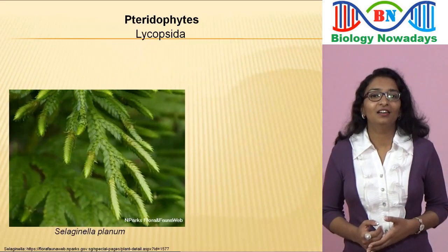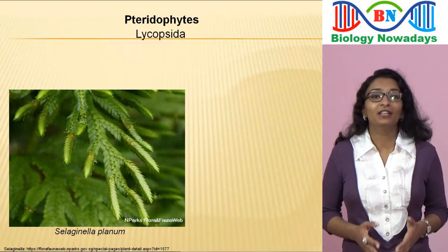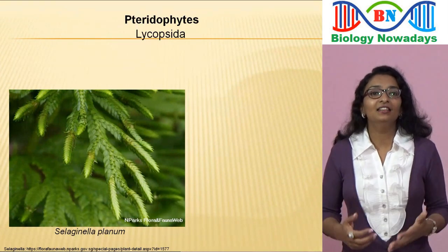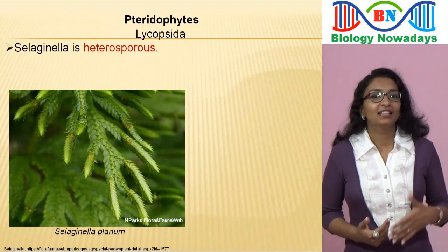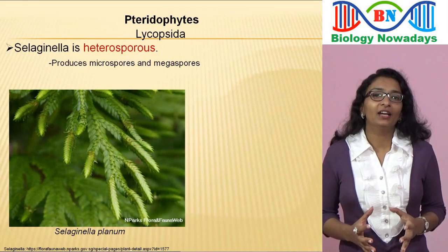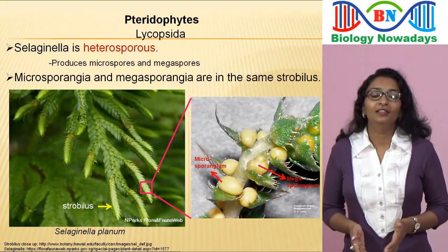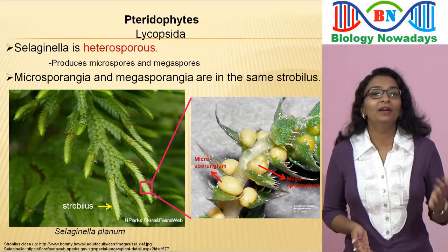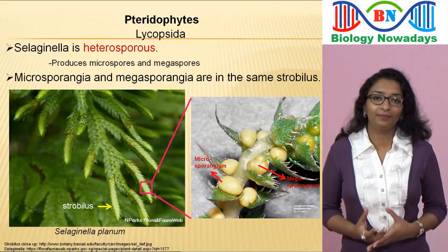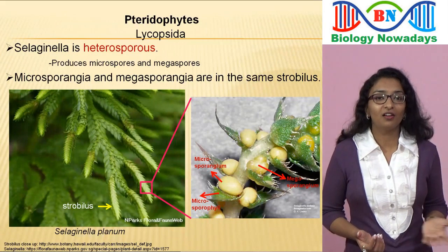Members belonging to the genus Selaginella are also common examples of this class. The main plant body of Selaginella looks very similar to that of Lycopodium. A main difference is that Selaginella is heterosporous, meaning it produces two different kinds of spores called microspores and megaspores. In the strobilus of Selaginella, there are two different kinds of sporangia: microsporangia, which produce microspores, and megasporangia, which produce megaspores. Sporophylls bearing microsporangia are called microsporophylls and those bearing megasporangia are called megasporophylls.